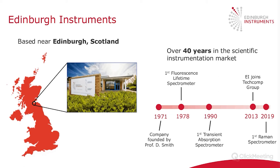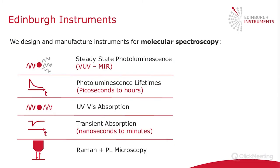Before I get started, I'll give a brief introduction to Edinburgh Instruments for those not familiar with us. We're based near Edinburgh, Scotland, and we've been manufacturing scientific instrumentation for over 40 years. The company was founded in 1971 as a spin-out from Heriot-Watt University. Our first fluorescent spectrometer was released seven years later, and this has been expanded to transient absorption spectroscopy and now Raman microscopy. At Edinburgh Instruments, we design and manufacture instrumentation for molecular spectroscopy, covering the full range of steady state and time resolved optical spectroscopy techniques.